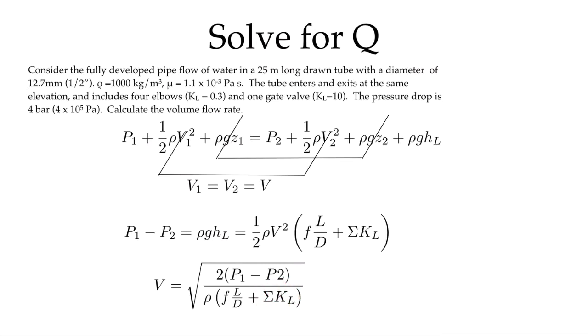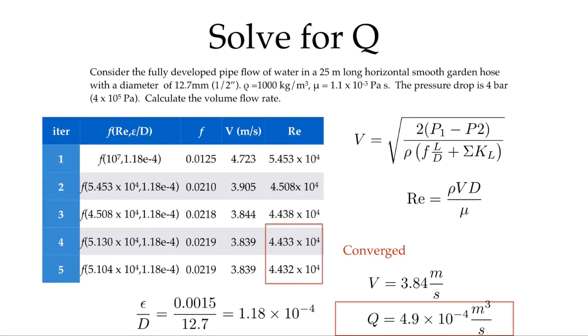And so now we can go about iterating. I can create a table as I did before. We're going to start now—the only difference is we're using the relative roughness that we have for this particular problem. But I'm going to start with a very high Reynolds number. I'm going to estimate a friction factor based on a flow Reynolds number of 10 million at my given roughness ratio. That gives me this value, from which I can now calculate the velocity of 4.723, from which I can calculate the Reynolds number, and then I can iterate.